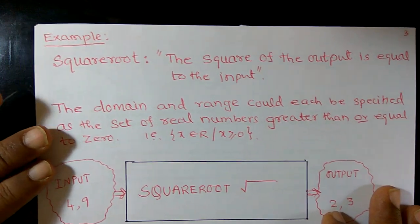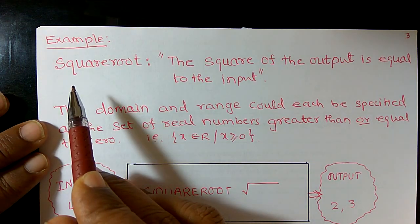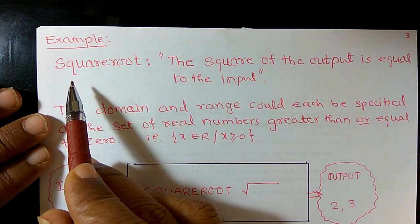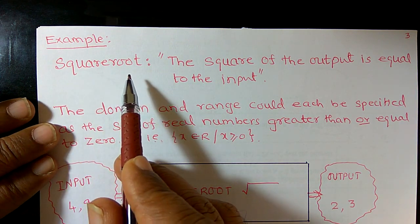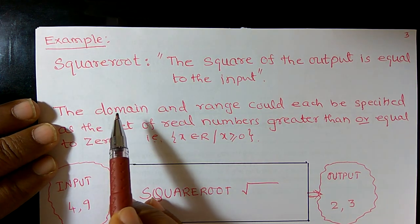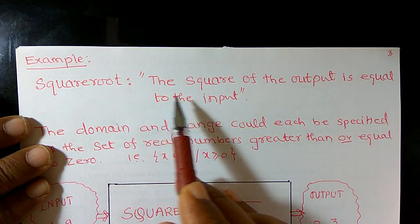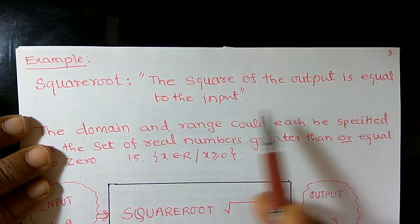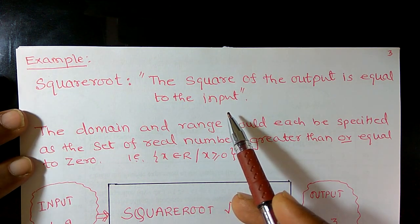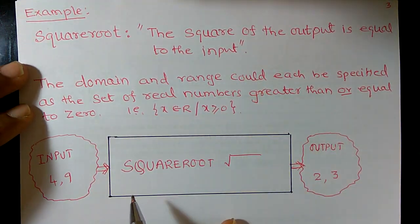I can give one more example for the real value function. Say for example, name of the function is square root. And this function is defined in this form: the square of the output is equal to the input.